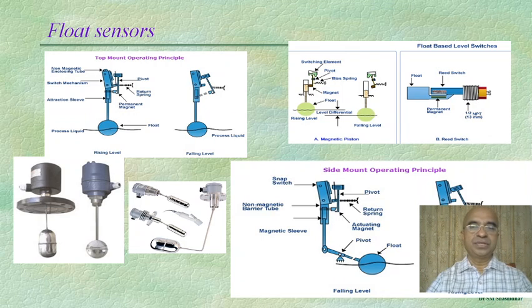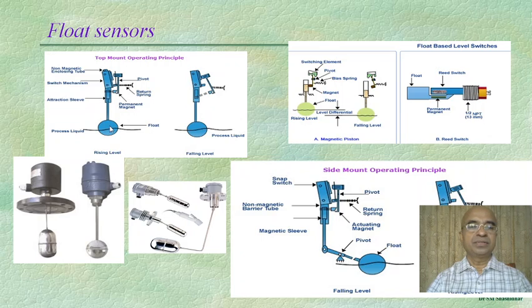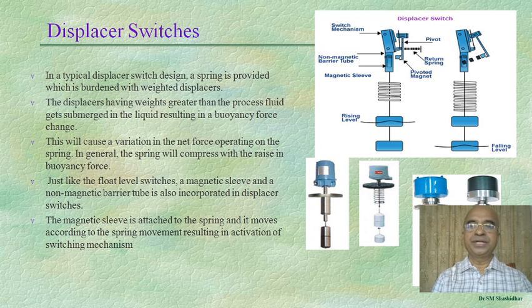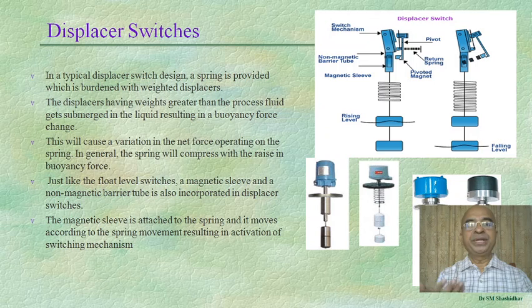Float sensors are shown in various industrial applications, including float-based level switches and side-mount operating principles, showing how floats are connected to automation mechanisms for turning on or off some process. Next are displacer switches: when the float level changes — rising or falling — the displacement changes, and based on that, some automation action can be triggered.